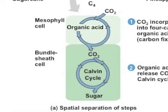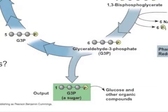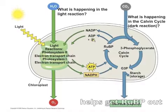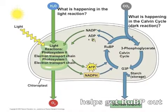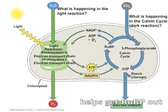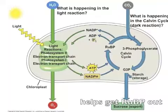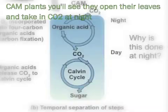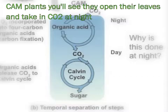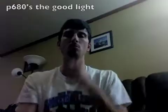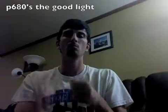C4 leaves have the carbon cycle split between mesophyll and bundle sheath cells. G3P is the product made after carbon is fixed and reduced. ATP from the light reactions helps regenerate RuBP to pull in more CO2. CAM plants open their stomata at night, taking in CO2 at night.